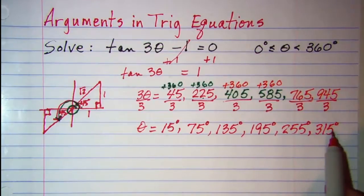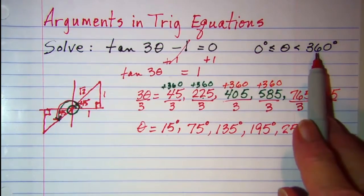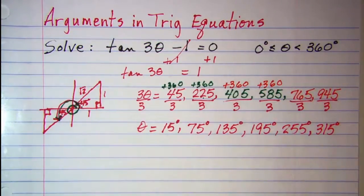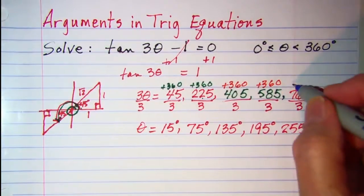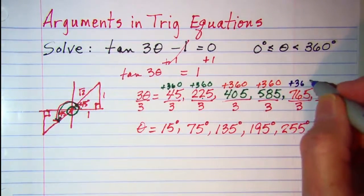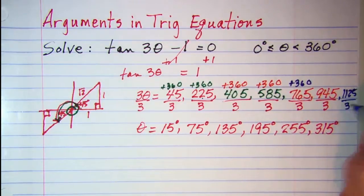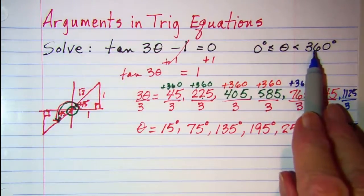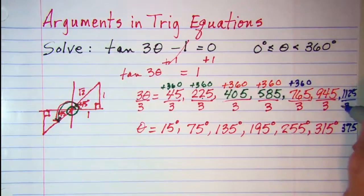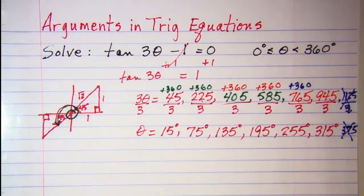Now 315 is very close to the upper limit of my domain, but I can go ahead and check to see if I can do any more. If I add 360 here, I'll get 1125. And then when I divide by 3, that's 375. And 375 is too big. It's outside of my domain. So I won't be needing this angle.